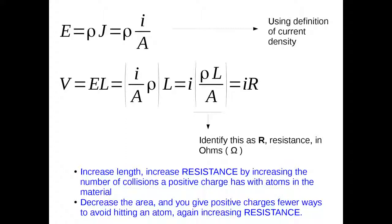We can use Ohm's Law to figure out the relationship between R and rho. Rearranging to get something that looks like Ohm's Law, we get (rho times L over A) times I equals V. In order to recover V equals IR, we identify R equals rho times L over A. As resistivity increases, resistance increases — that's why it's called resistivity. If you put more material in the path of the charge by lengthening it, you offer the opportunity for more collisions, and R goes up.